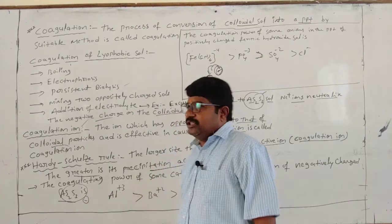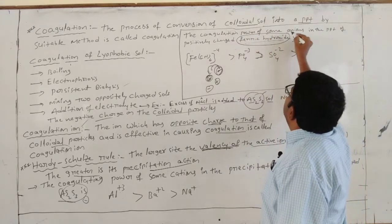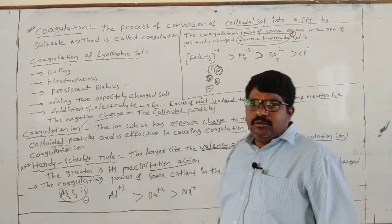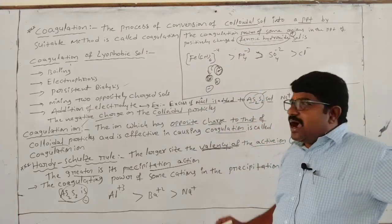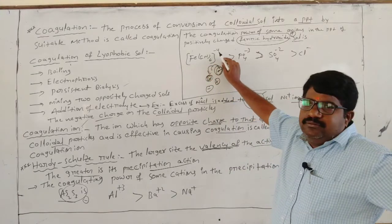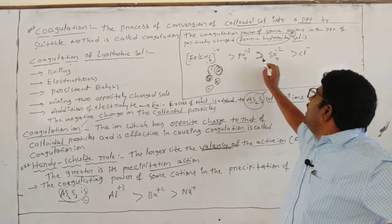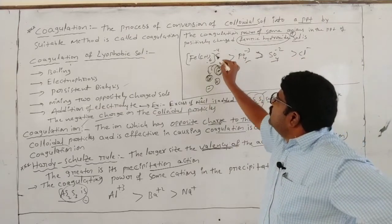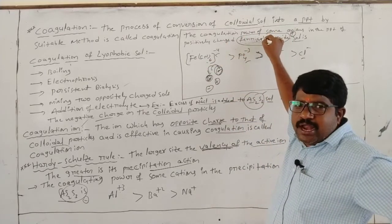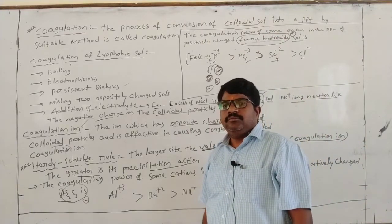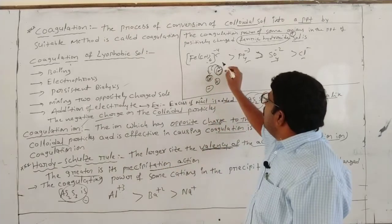For positive charge particles — for example, ferric hydroxide sol, which is a positively charged sol — negative charge ions are needed to cause coagulation. The order of effectiveness is: ferricyanide ion > PO₄³⁻ > SO₄²⁻ > Cl⁻. These are all negative charge ions. Adding them to the positive colloidal solution causes it to precipitate.